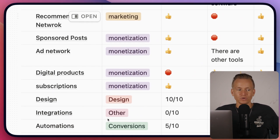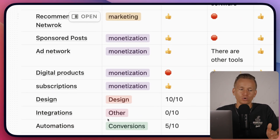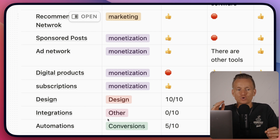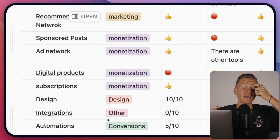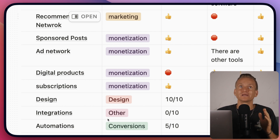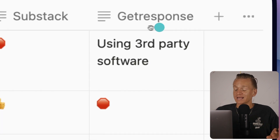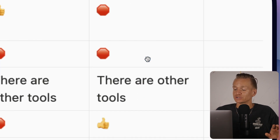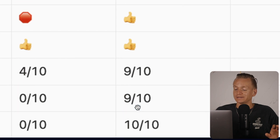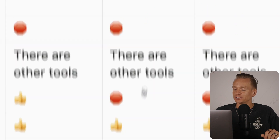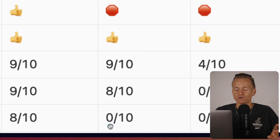The next really important thing is automations, which is important for conversions. If you're running a business and promoting offers — digital products, affiliate, whatever — you want automations that help you make money on autopilot. I can't emphasize how important that is. GetResponse has a lot of automations: 9 out of 10. Ghost has no automation whatsoever: 0 out of 10.